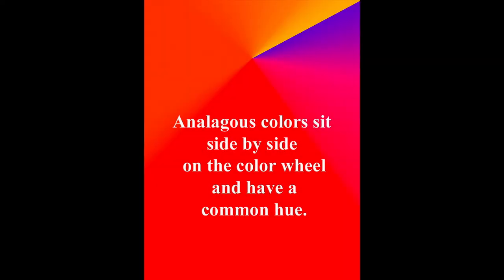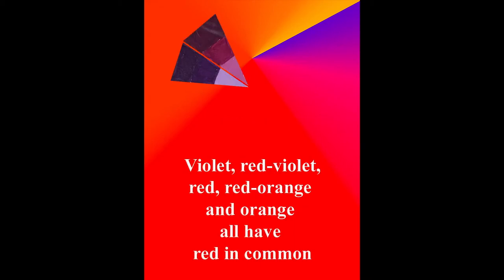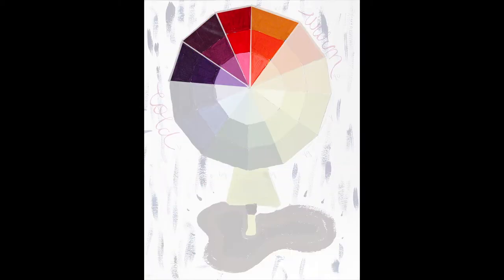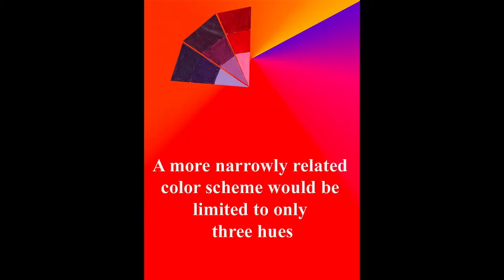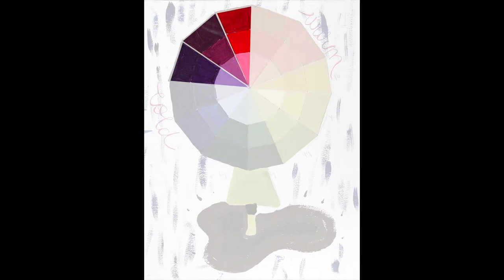Analogous colors are colors that sit side by side on the color wheel and have a common hue. Violet, red-violet, red, red-orange, and orange all have red in common. A more narrowly related scheme would be limited to only three hues, such as violet, red-violet, and red.